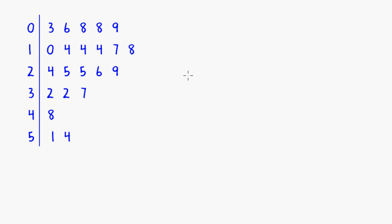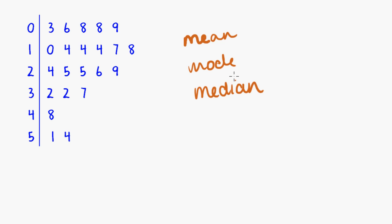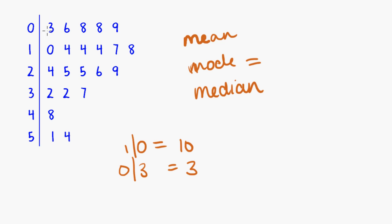So let's practice finding those three summary statistics — the mean, the mode, and the median — for this stem plot. Let's start with the mode because that one's often the quickest and easiest to find, as it is the most commonly occurring value. In this stem plot, 0 | 3 means the number 3, and 1 | 0 means the number 10. Going through: 3 occurs once, 6 once, 8 twice, 14 three times, 25 twice, 32 twice. The winner is 14 with 3 occurrences, so that is the mode.